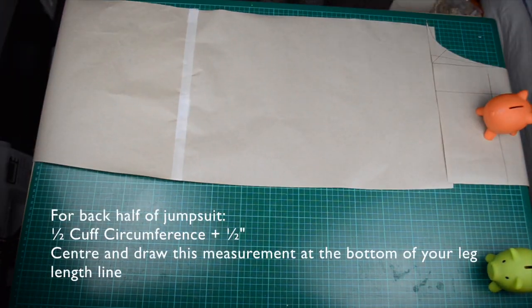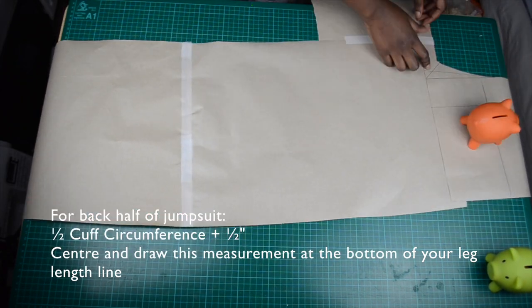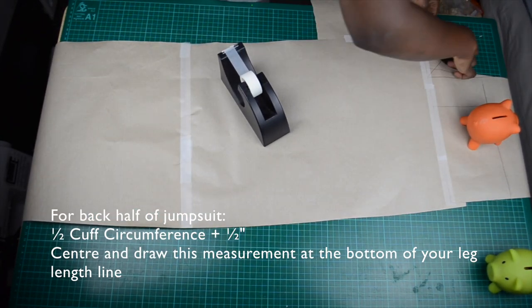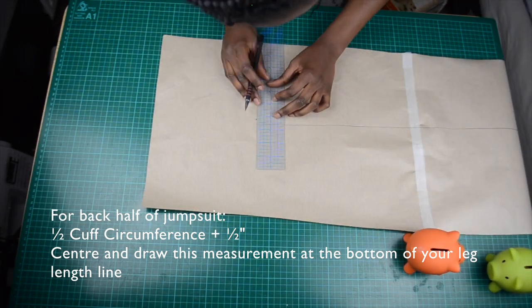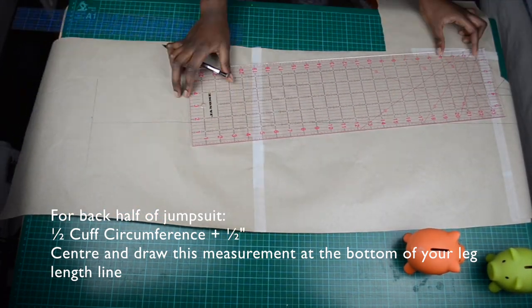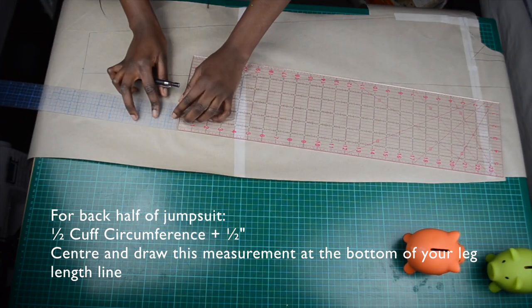Now do the same for the back pattern. This time, take a calf circumference, divide it by two and add half an inch. Center this measurement at the bottom of the central line and then draw in your trouser legs.